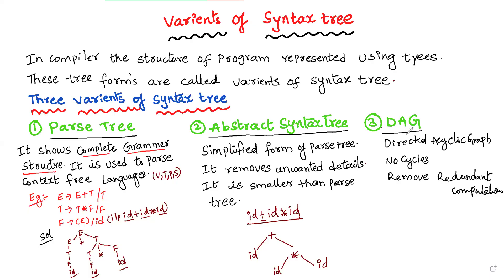The third variant is DAG — directed acyclic graph. Parse tree includes all details, abstract syntax tree is the simplified version of parse tree, and in the DAG we represent without cycles. It is also called a directed acyclic graph and it removes redundant computations.